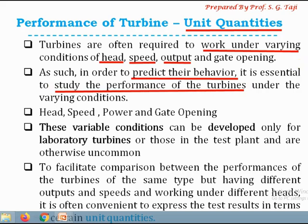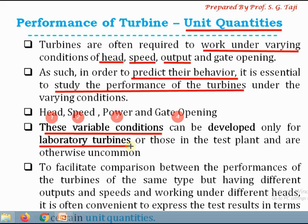For this purpose we generally consider four parameters: head, speed, power output of the turbine, and gate opening. Whenever we govern the output of the turbine, it is generally governed by controlling the gate opening. Those are the four variables which change on site, and that variable condition is developed in the laboratory, because that kind of variable condition is quite difficult to develop on the actual site. Before putting the turbine into working, we perform a test on the turbine to see how it will perform under variable conditions — for example, if the head changes from 10 meters to 50 meters, how will the turbine perform? That test is conducted in the laboratory or test plant.